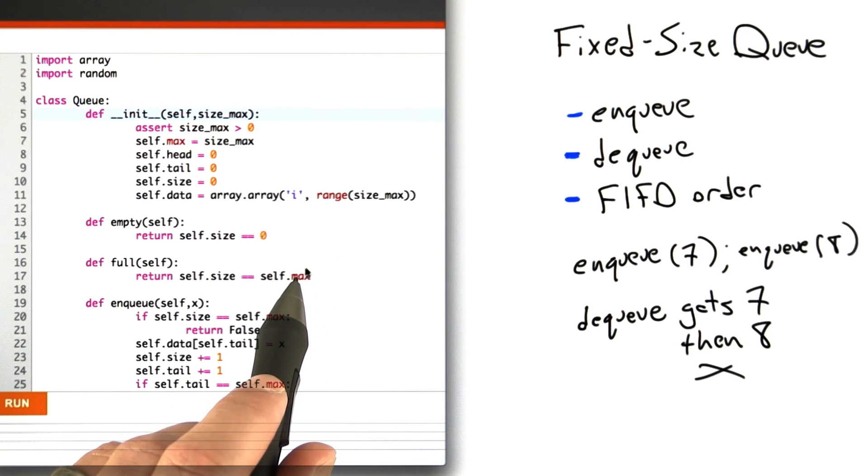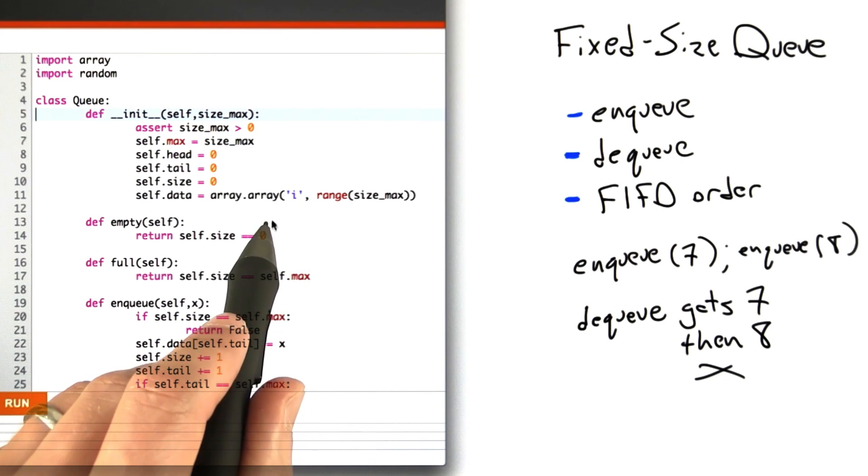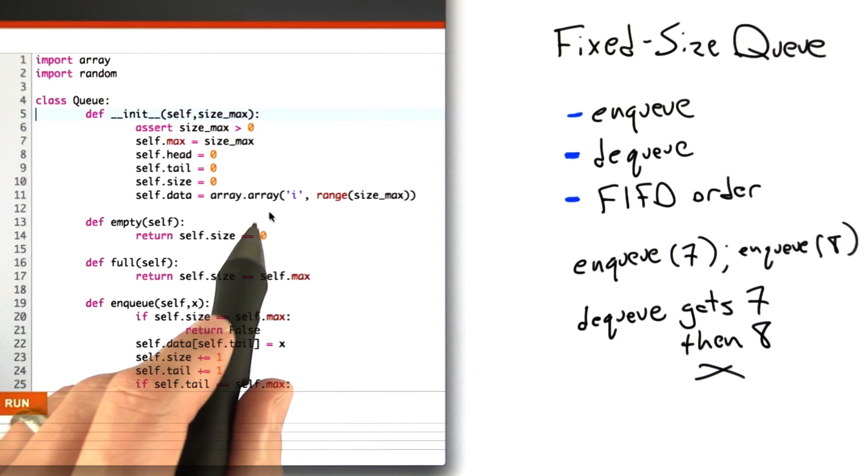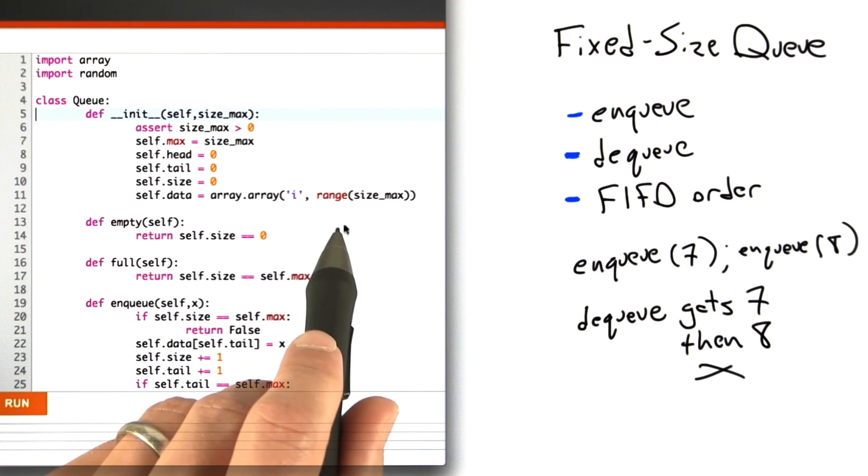In some cases a queue based on a Python list is perfectly fast, but in some benchmarking that I did, this statically sized, statically typed queue is more than 10 times faster than a queue based on a Python list.